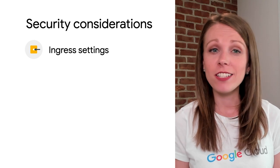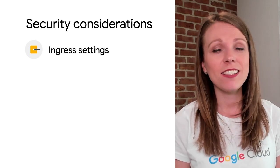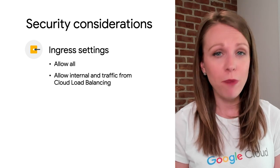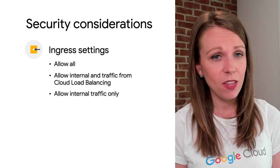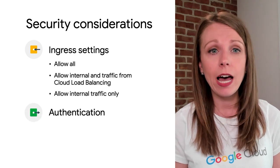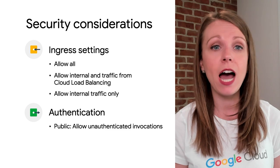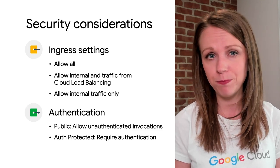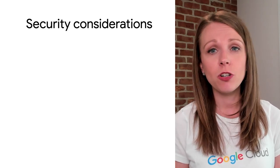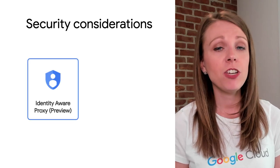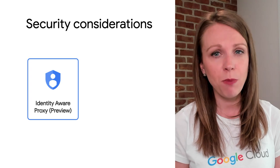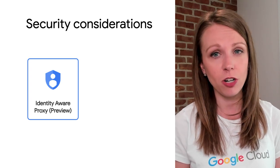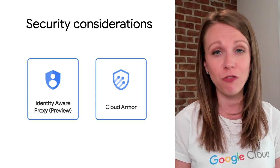Now that we've discussed routing patterns, let's talk about a few ways to secure Cloud Run services. Make sure to properly configure your ingress and authentication settings. Ingress has the settings to allow all, allow internal and load balancer, and allow internal traffic only. As for authentication, you can choose to allow unauthenticated invocations for public APIs or websites, or to require authentication for which users are managed through Cloud IAM. Additionally, if you are using an external HTTPS load balancer, you can configure identity-aware proxy — which as of the date of publication is in preview — as an authentication service, as well as Cloud Armor as a web application firewall.